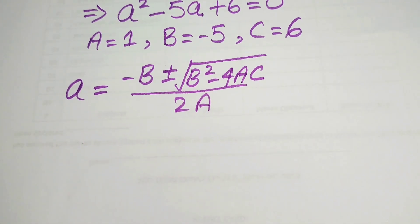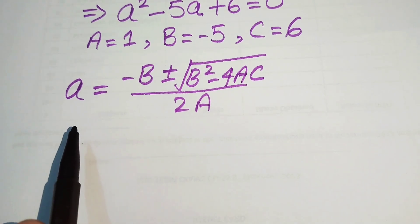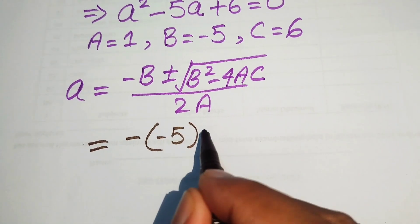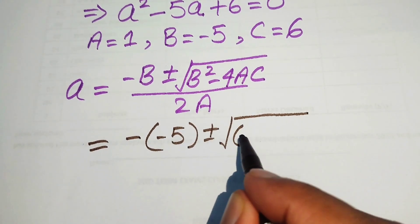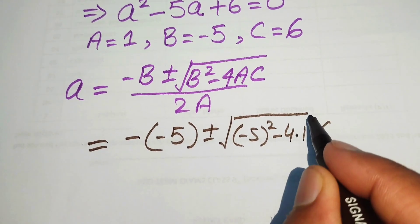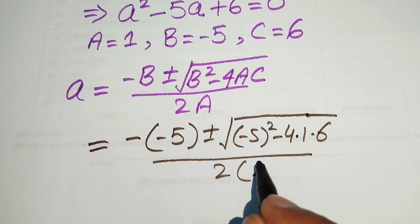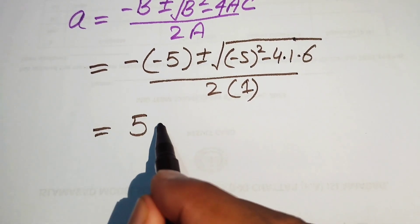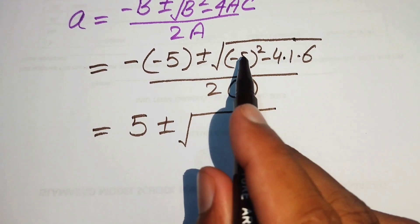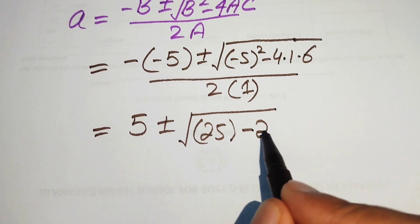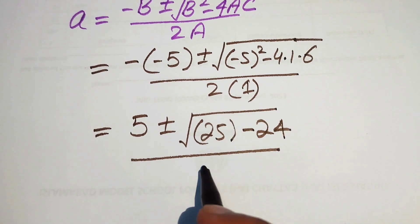Now we substitute the values of A, B, and C into the formula. Substituting B equals minus 5: this gives minus times minus 5, plus or minus square root of (minus 5 squared minus 4 times 1 times 6), divided by 2 times 1. Simplifying: 5 plus or minus square root of (25 minus 24), divided by 2.